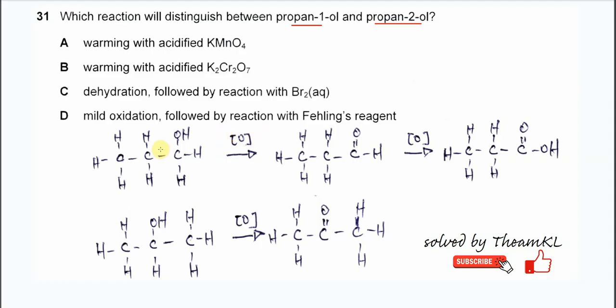Propan-1-ol is a primary alcohol. The carbon with OH has one alkyl group. Propan-2-ol is a secondary alcohol. The carbon with OH has two alkyl groups, one, two, so it's secondary.